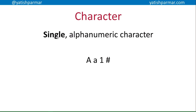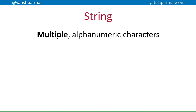Data type number three is the character — single alphanumeric characters. For example, capital A, lowercase a, the number 1, a hash symbol, an exclamation mark — any single alphanumeric character.